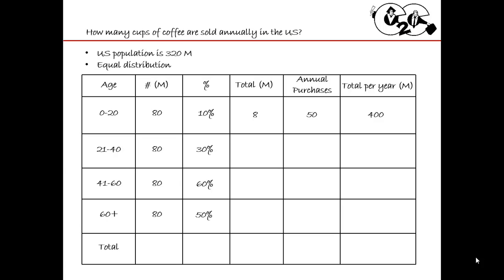For 21 to 40, I have 80 million people and 30% of them, giving me 24 million. They're buying about 3 cups per week, so 3 times 50 is 150 cups per year. Now, some of you find mental math daunting — here's a tip: do not write scratch work on this sheet of paper. Get another sheet of paper, write it on there, but don't let your interviewer see that sheet. Keep this clean table in front of their face.